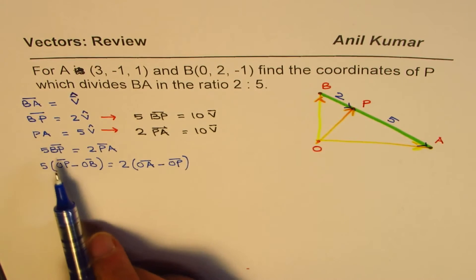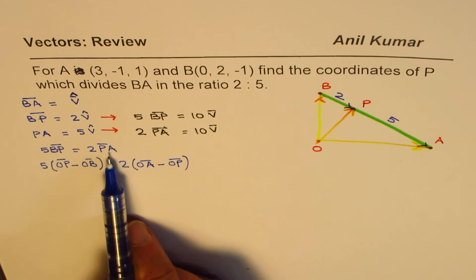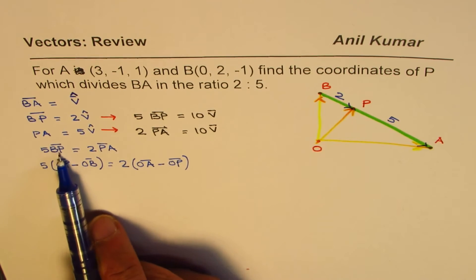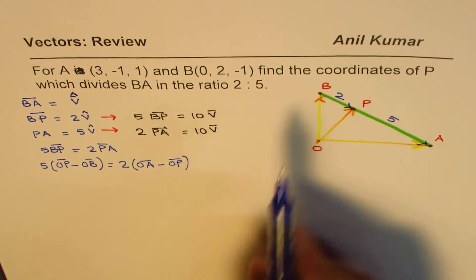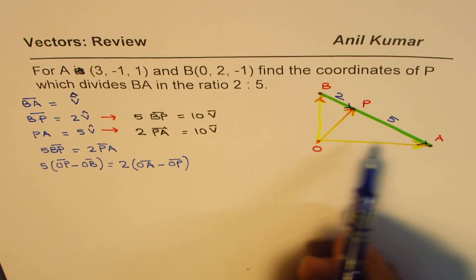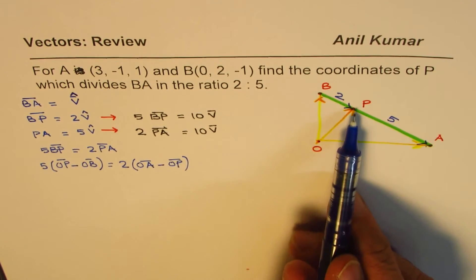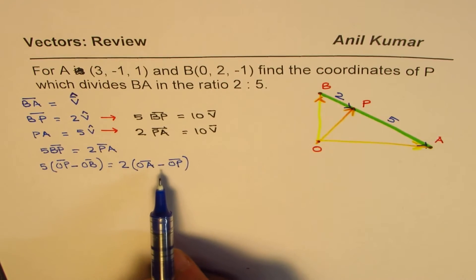So what we did was, first we proved that 5BP is 2PA, and then we wrote BP, B to P, as OP minus OB, and P to A as OA minus OP. So we've got position vectors now.